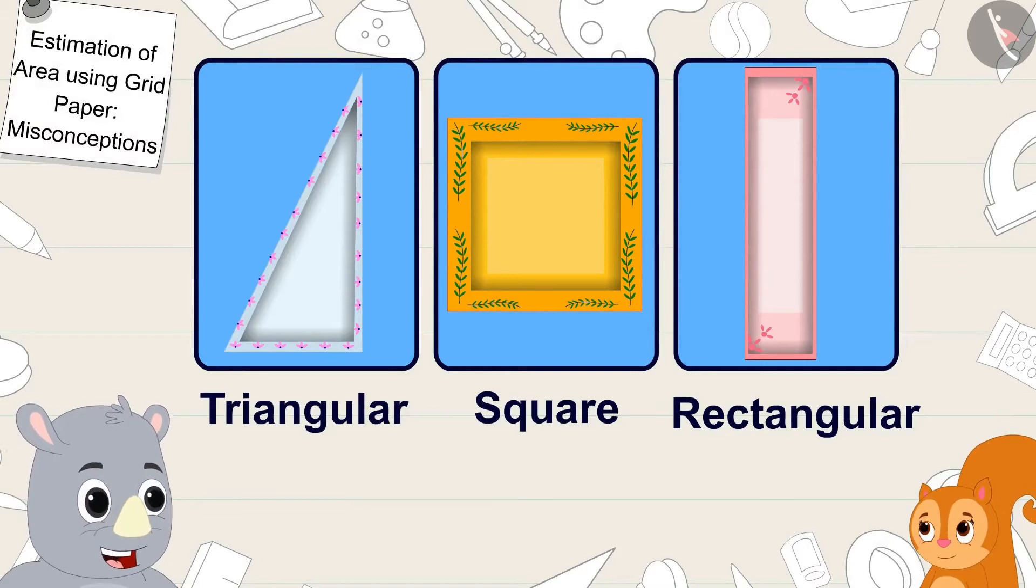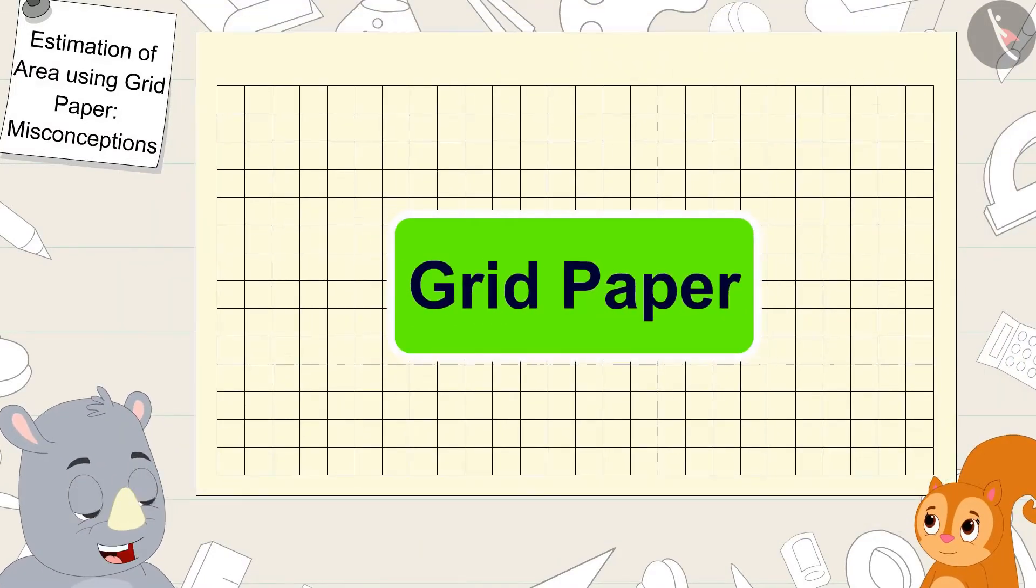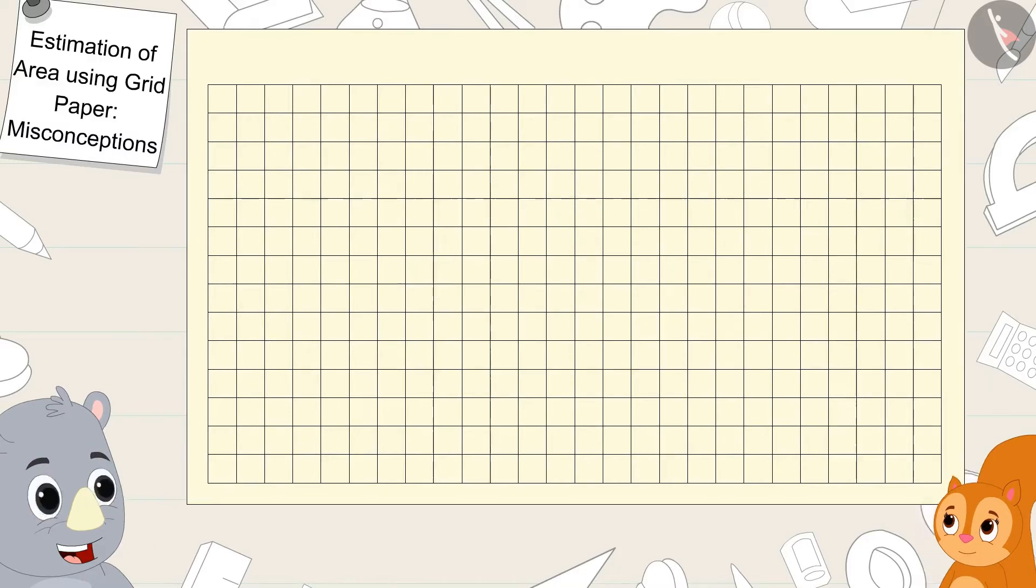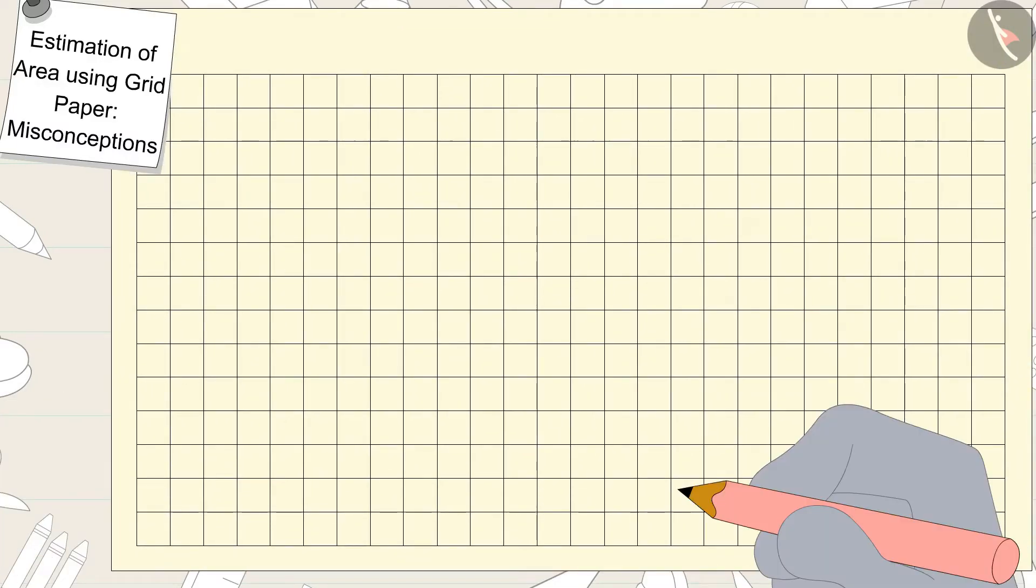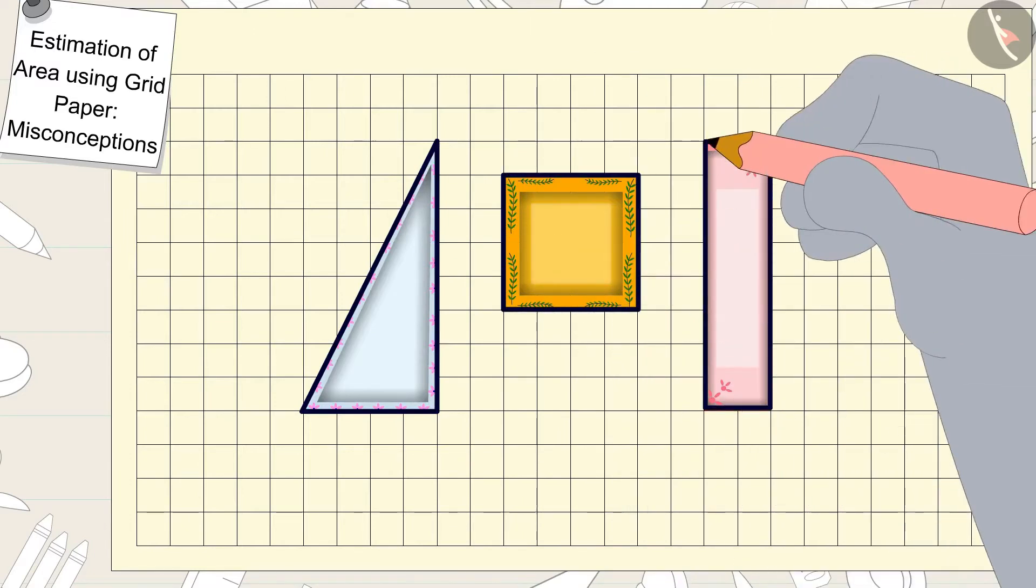Gaggoo laughed and said, No Chanda, come let me explain this to you using this grid paper. After saying this, Gaggoo used a pencil to trace the outlines of the three plates onto the grid paper.